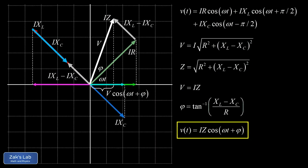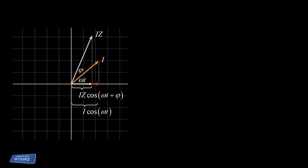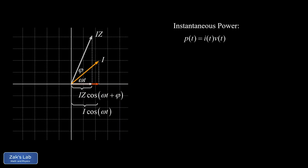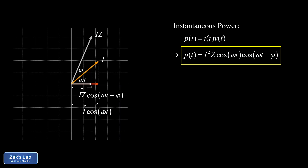Now we calculate the total power delivered to the circuit by the source. The phasor diagram is stripped down to just the current and net voltage phasors. The instantaneous power is current times voltage. Substituting in, the current is I·cos(ωt) and the voltage is IZ·cos(ωt + φ), giving instantaneous power P = I²Z·cos(ωt)·cos(ωt + φ), where φ is the phase angle between the net voltage and current phasors.